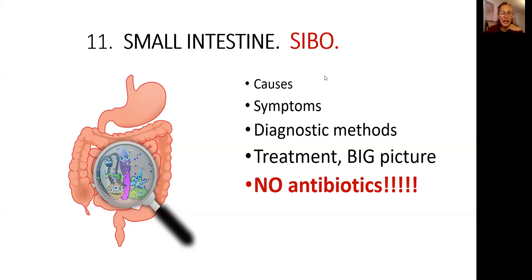Let's continue our education on the digestive tract. Today's topic is small intestine bacterial overgrowth, or SIBO. We will talk about causes, symptoms, diagnostic methods, and treatment — only a big picture, because I will be covering treatment in detail in individual lectures. And please, no antibiotics.